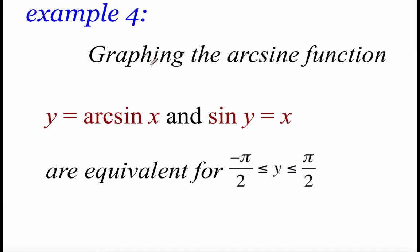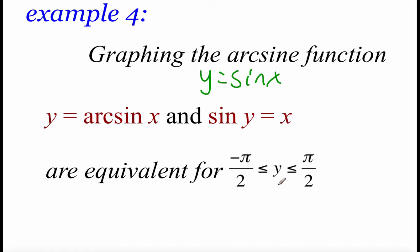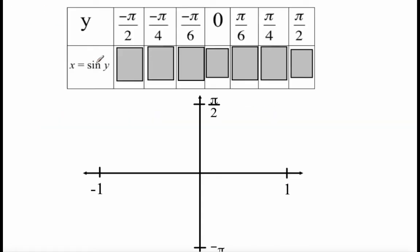In example 4, we're going to look at graphing out an arc sine function: y equals the arc sine of x, or the inverse sine of x. Thinking back to chapter 1, if we were looking at y equals the sine of x, one of the ways we found inverses was by interchanging the x and y values. So y equals the arc sine of x and sine of y equals x really mean the same thing when we're looking between the angles negative pi over 2 and pi over 2 for those y values. We're going to plug in y values and get back x value answers.